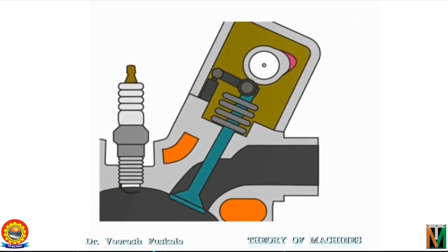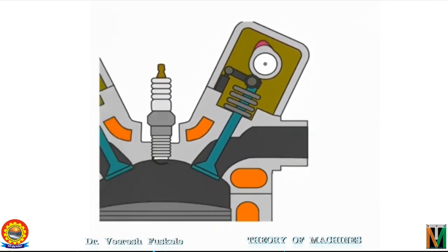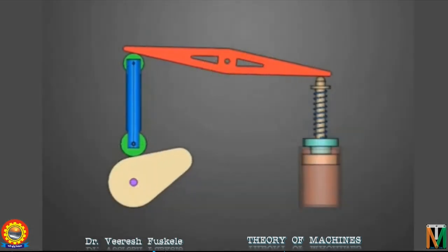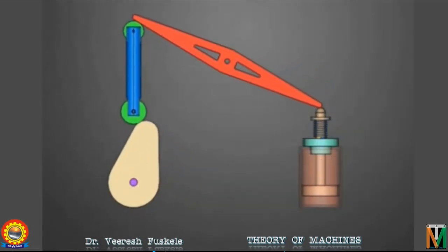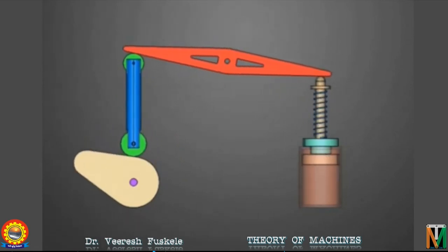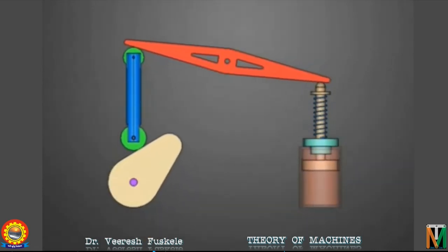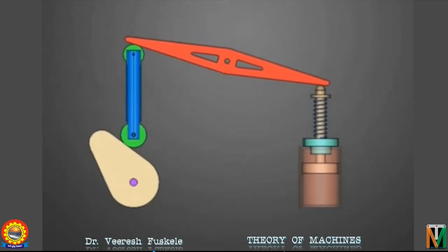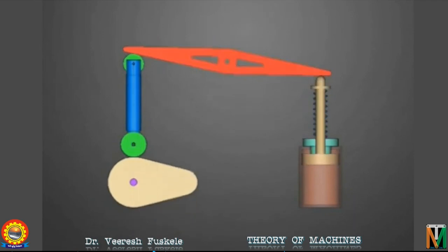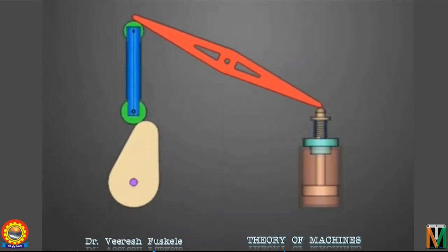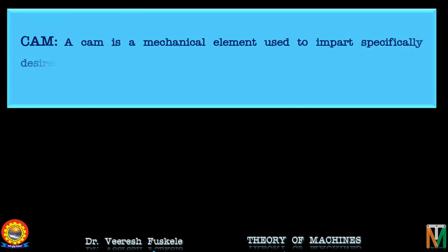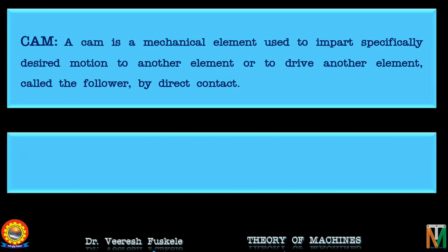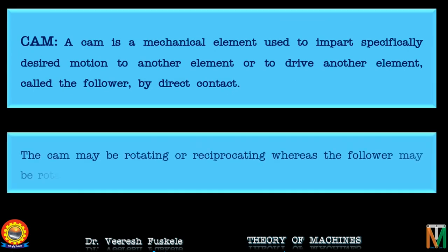The scope of our discussion will be limited to planar and two-dimensional cam and follower mechanisms — that is, all the points of the mechanisms will move in parallel planes. So a single projected view along the line perpendicular to the plane of movement will give you the true movement of the points of the mechanism. Having discussed the cam and follower mechanism, let us now define cam. A cam is a mechanical element used to impart a specifically desired motion to another element, called the follower, by direct contact. The cam may be rotating or reciprocating, whereas the follower may be rotating, reciprocating or oscillating.